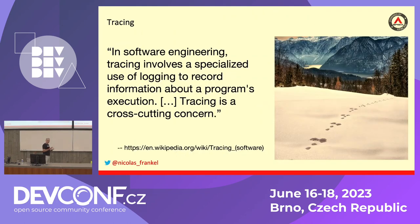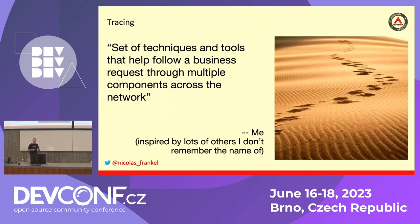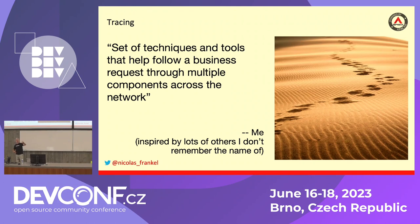The third pillar is tracing. I generally love the Wikipedia definition, but in this case it's not that great, so I came up with my own definition. What you want to do is trace a request across your distributed system components. You want to know which places it went through, and if something bad happens, you want to know where it stops.